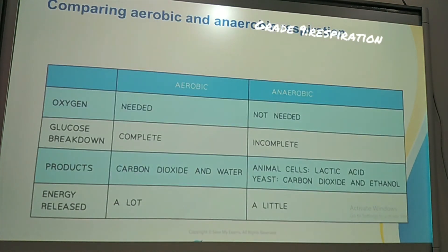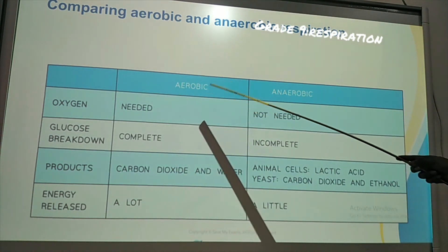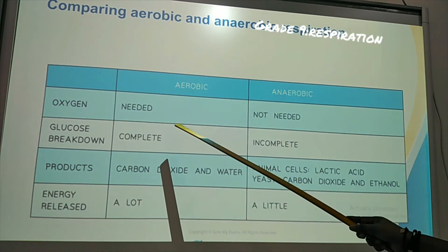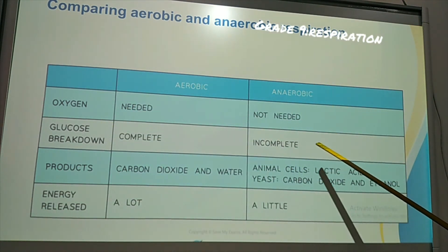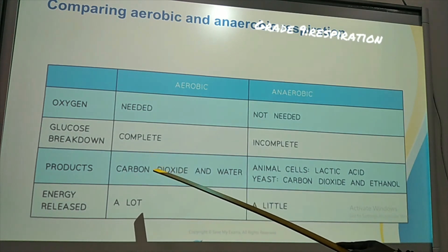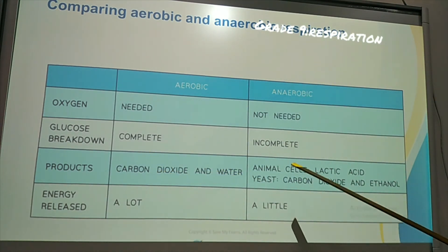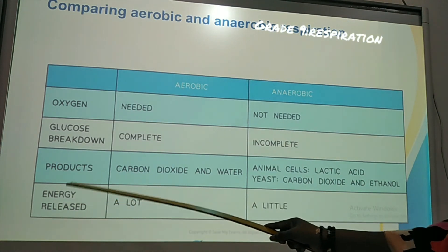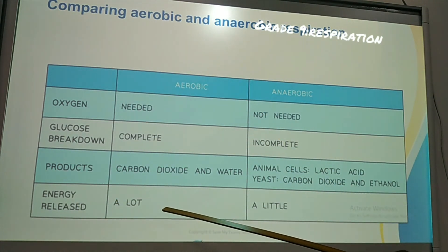Let's look at the differences between the two types of respiration. Oxygen: needed in aerobic, not needed in anaerobic. Glucose breakdown: complete in aerobic, incomplete in anaerobic. Products: aerobic gives CO2 and water; anaerobic in muscles gives lactic acid; anaerobic in yeast gives CO2 and ethanol (alcohol). Energy released: aerobic releases a large amount; anaerobic releases just a little.